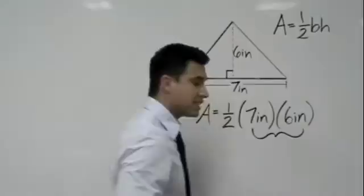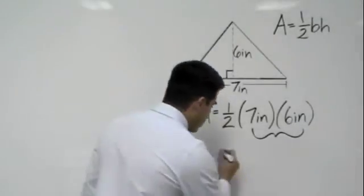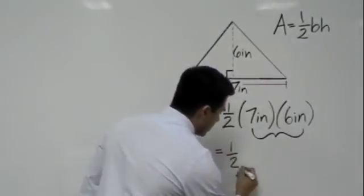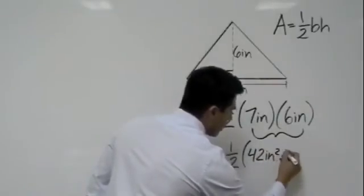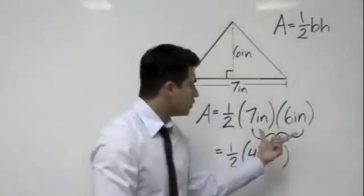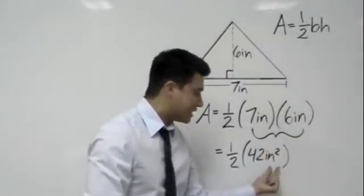So I'm going to go ahead and multiply six times seven, which would give me one half times 42 inches squared. Six times seven is 42 and inches times inches is inches squared.